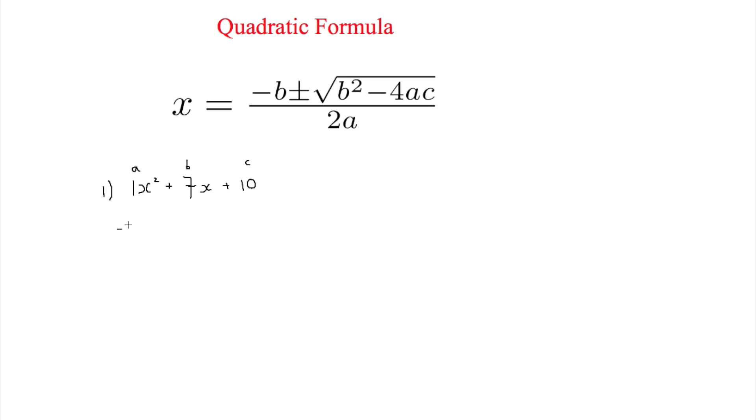To use the quadratic formula for this one, you do negative 7 (that's negative b), then plus or minus the square root of 7 squared (that's b squared) minus 4 times a (which is 1, but I'll put that in) times c (which is 10). That's all square rooted. And this is all over 2 times 1, which is 2.